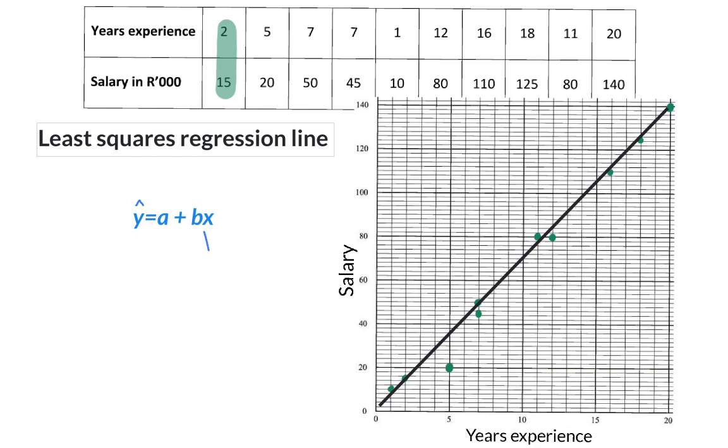So in this case, the b value indicates the gradient, and the a value indicates the y-intercept.